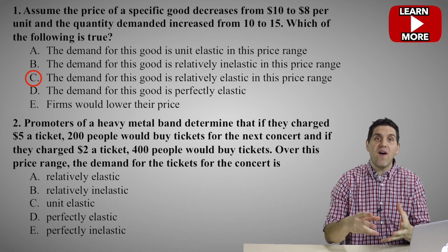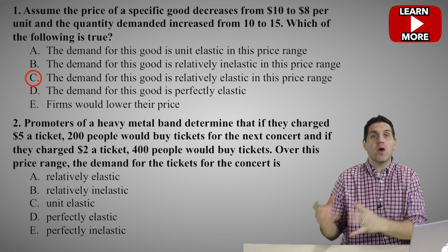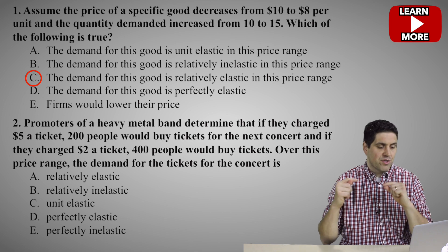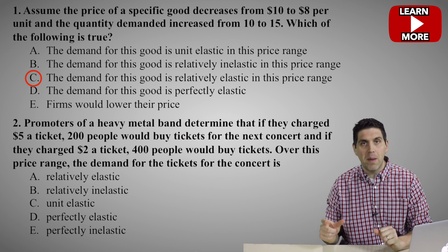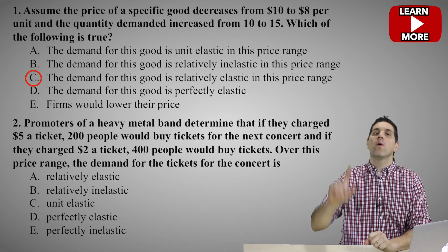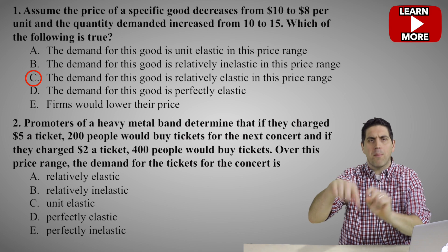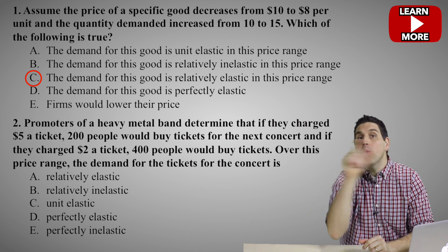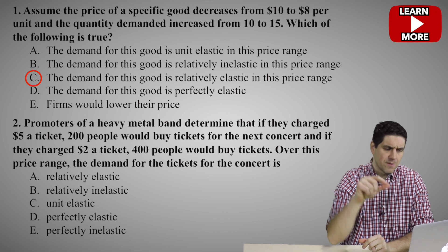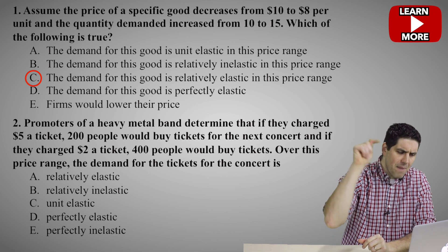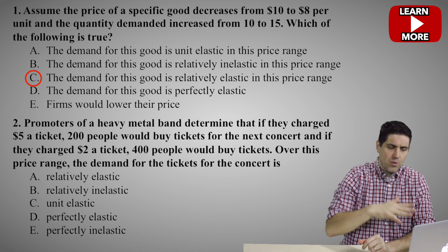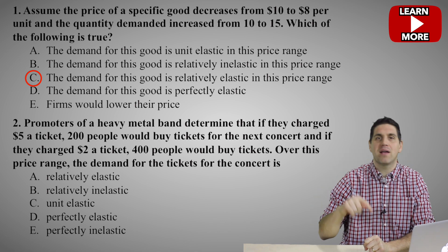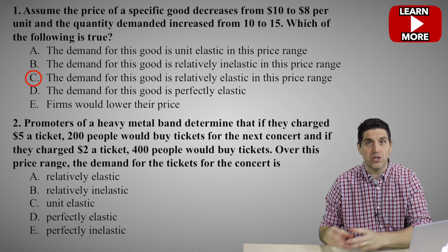For question number two, if the price is $5, then 200 people show up — that's $1,000 of total revenue. If they lower the price down to $2 per ticket, then 400 people show up. When the price goes down, more people show up — that's the law of demand. The question is how much has that change been? The number of people who show up has doubled, but $2 times 400 is only $800 total.